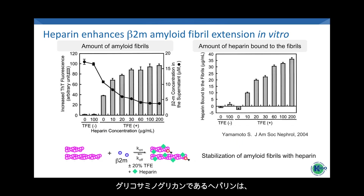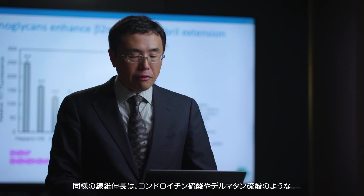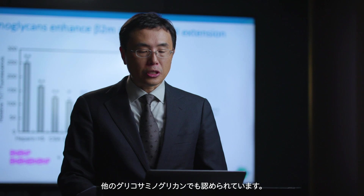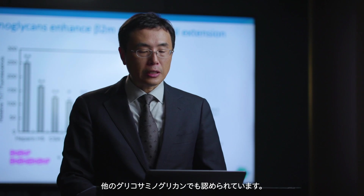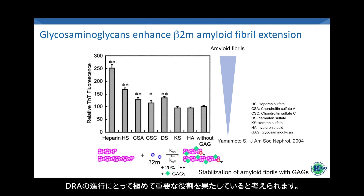Heparin, a glycosaminoglycan, enhances the extension of beta-2-m amyloid fibrils. The more heparin is added, the more it binds to the fibrils. Similar effects are observed with other glycosaminoglycans, like chondroitin sulfate and dermatan sulfate. Stabilizing fibrils with glycosaminoglycans is therefore crucial for DRA progression.